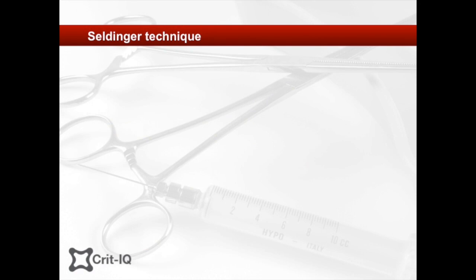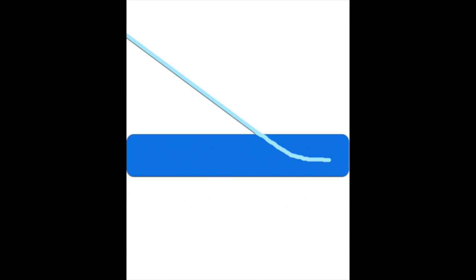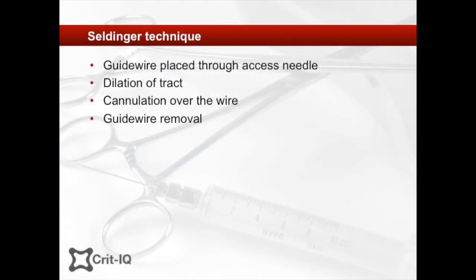The Seldinger technique is conceptually simple. First, a guide wire is placed through an access needle, followed by dilation, cannulation and guide wire removal, leaving the cannula in place. This video will first break down the stages of the Seldinger technique in detail and then provide a detailed description of each stage in the context of central venous line insertion.